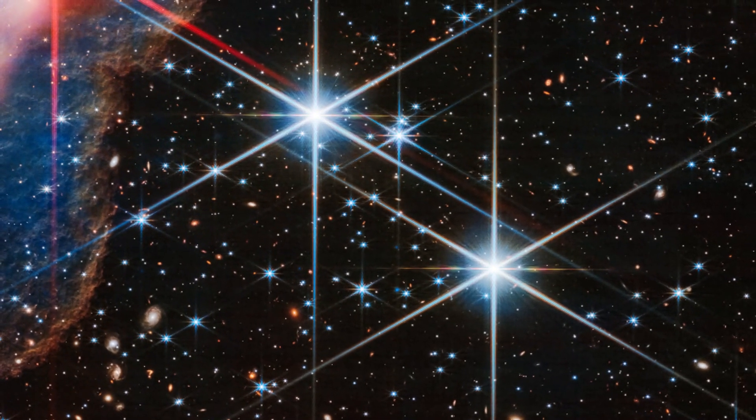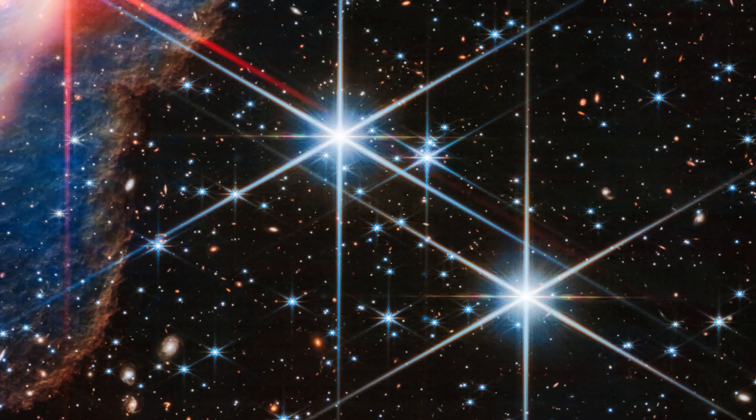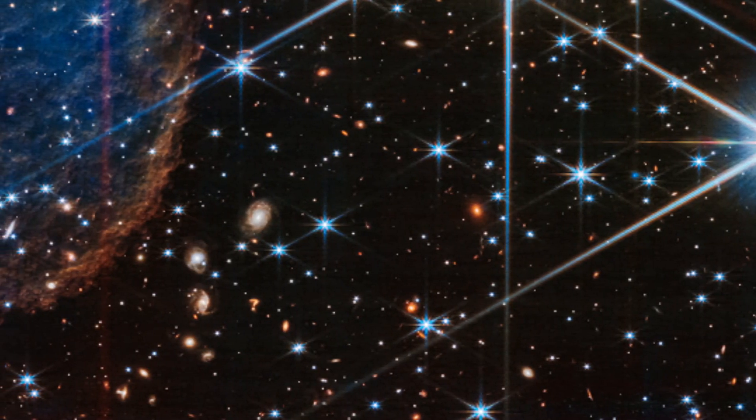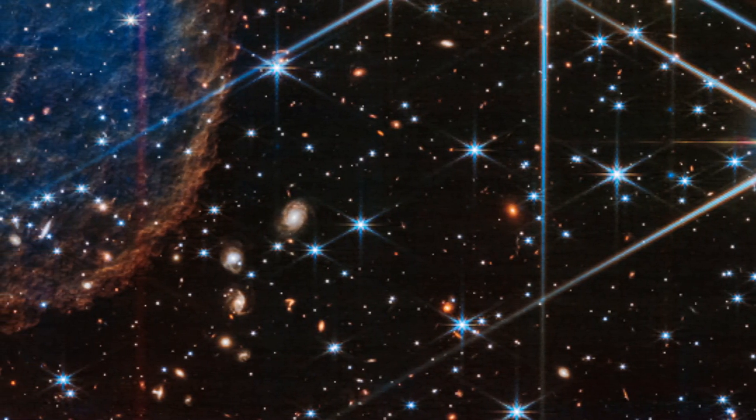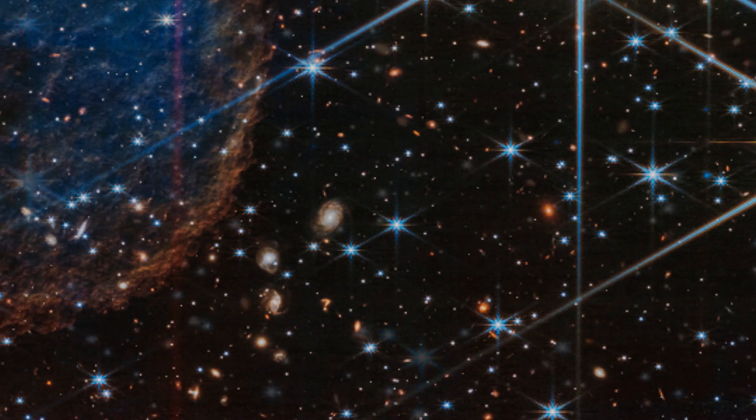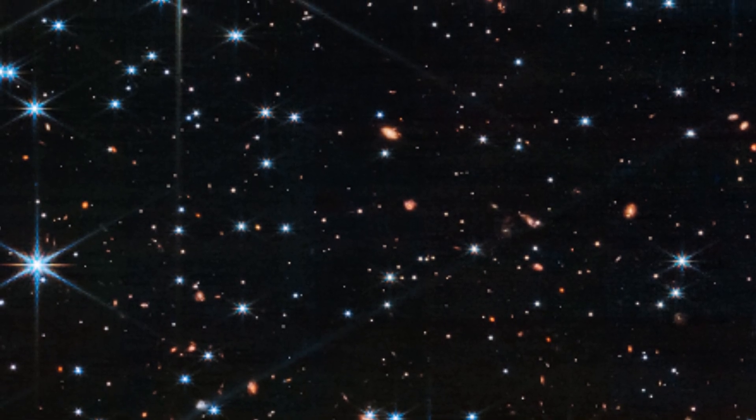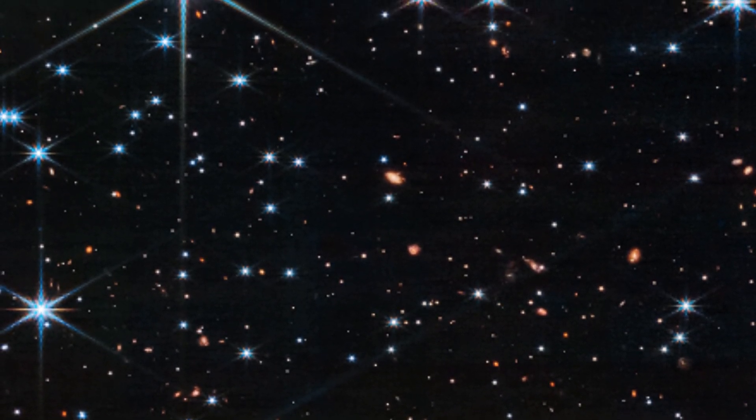Blue objects with diffraction spikes are stars, and the closer they are, the larger they appear. White and pink spiral galaxies sometimes appear larger than these stars, but are significantly farther away. The tiniest red dots, Webb's infrared specialty, are often the oldest, most distant galaxies.